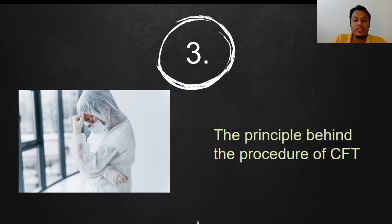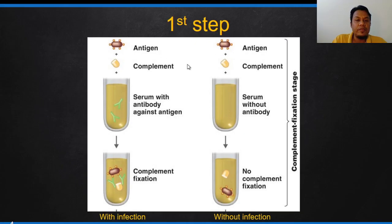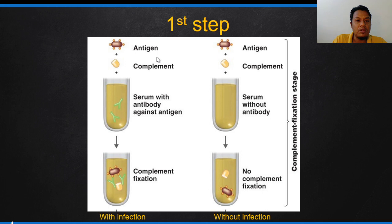The first thing we need to talk about is the principle behind the procedure of complement fixation test. This is the first step in performing complement fixation test. There are a few reagents needed for performing the CFT. First, we look at the antigen, the first reagent that is needed. This antigen represents the kind of pathogen that we are looking for in the patient.